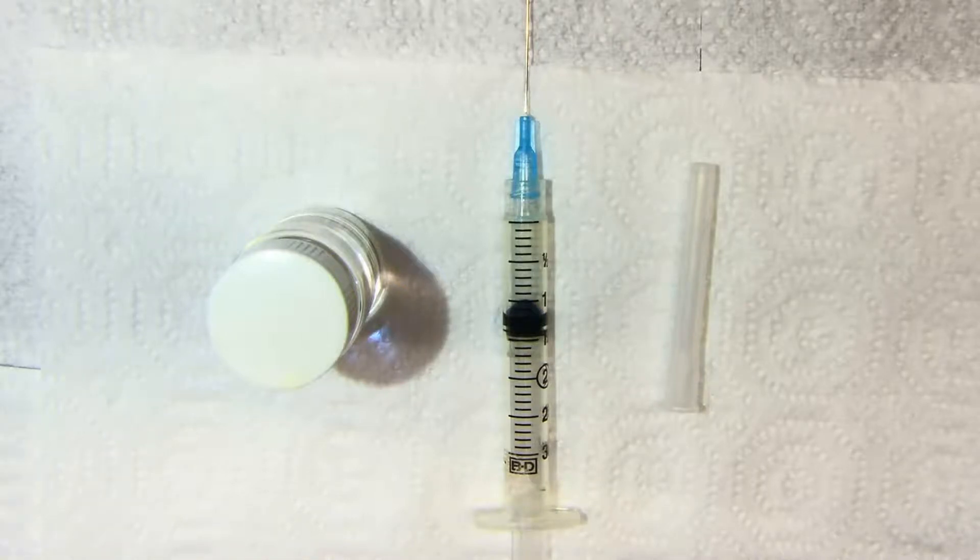Now, some syringes, like this one, have a stopper on the plunger. That's the black thing that you see here. You will read the syringe at the circumference of the stopper closest to the needle. The dome is ignored.